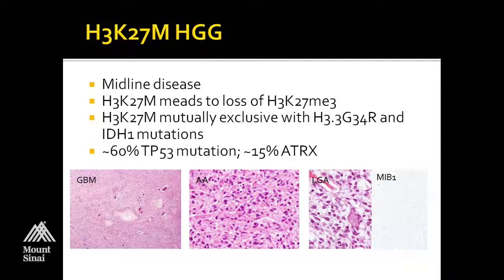In contrast, H3K27 is a midline disease thought to lead to loss of trimethylation on K27 across the entire genome. It's mutually exclusive with G34 and IDH mutations. The association with P53 and ATRX is there for K27, but it's much less strong than with G34 — about 60% of K27 cases will have a TP53 mutation and about 15% will have ATRX. This is age-associated: if you're looking at older children and adults, you're more likely to find ATRX associated with K27, but in kids under age 10, ATRX is much less likely.